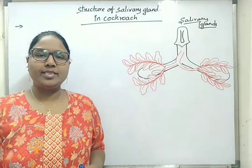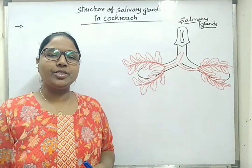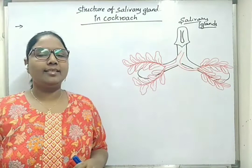Hello students, now we will discuss about salivary glands of cockroach. The digestive glands associated with the alimentary canal of cockroach are of three types: first, salivary glands; second, hepatic caeca; and third, glandular cells of mesenterone, or midgut, or ventriculus.